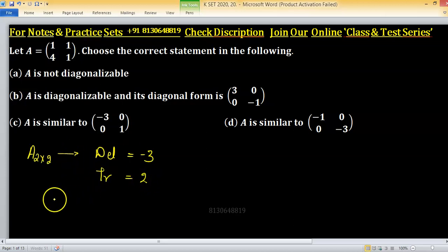If we write the characteristic equation in terms of x, x squared minus 2x minus 3 equals to 0.